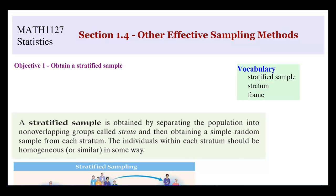First, let's talk about stratified sampling. A stratified sample is obtained by separating the population into non-overlapping groups called strata, and then obtaining a simple random sample from each stratum. The individuals within each stratum should be homogenous or similar in some way. Essentially, we're creating groups of individuals and then taking a sample out of each of those groups.